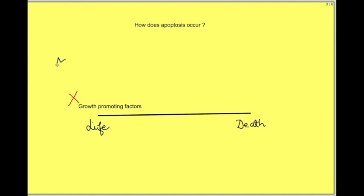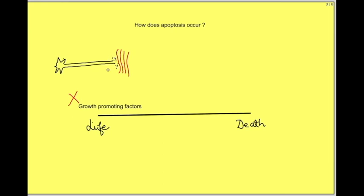An example: in the case of nerve injury, we see atrophy of the muscle which that nerve supplies. When the nerve is intact, it releases certain growth factors that maintain the survival of those muscle cells. When nerve injury occurs, there is an absence of growth-promoting factors for the muscle, leading to apoptosis and thus atrophy of the muscles. This is an example where apoptosis becomes clinically relevant.